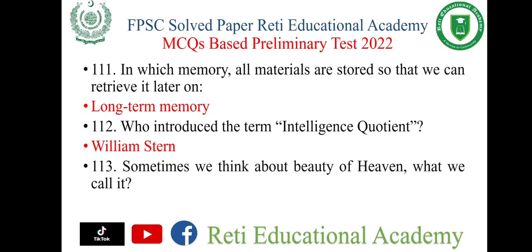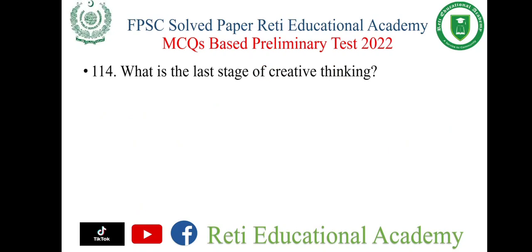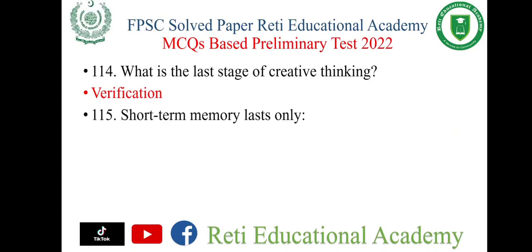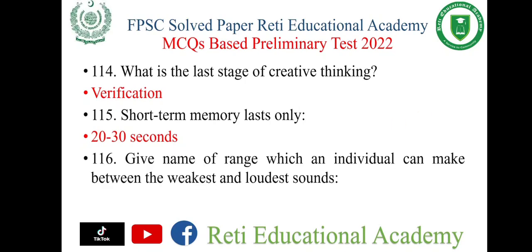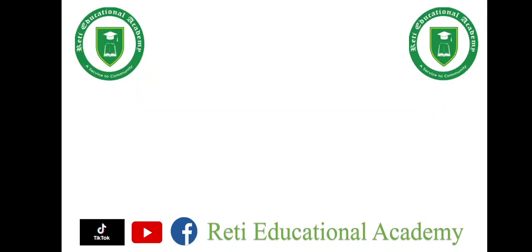Question number 113: Sometimes we think about the beauty of heaven — what do we call it? The right option is fantasy. Question number 114: What is the last stage of creative thinking? The right option is verification. Question number 115: Short-term memory lasts only 20 to 30 seconds. Question number 116: Give the name of the range which an individual can make between the weakest and loudest sound — the right option is dynamic range.